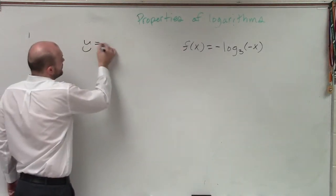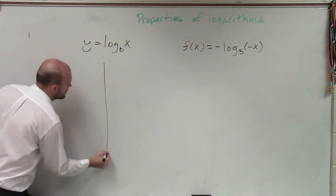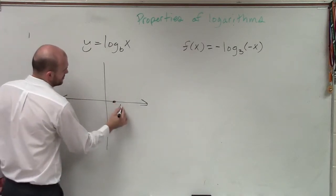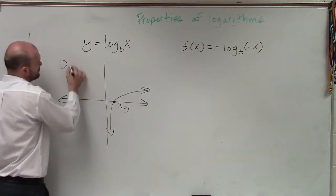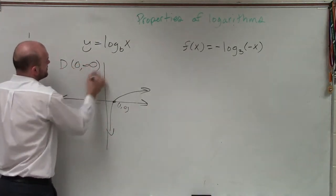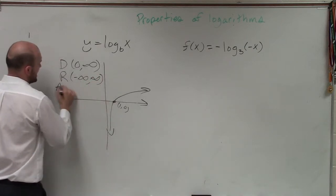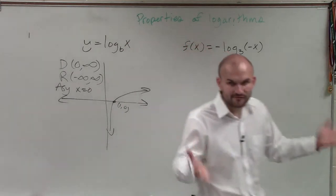You have to know the base or the general parent function. That's with no transformations. Here, you know the domain is from 0 to infinity, the range is from negative infinity to infinity, and the asymptote is at x equals 0. That's information that's given.